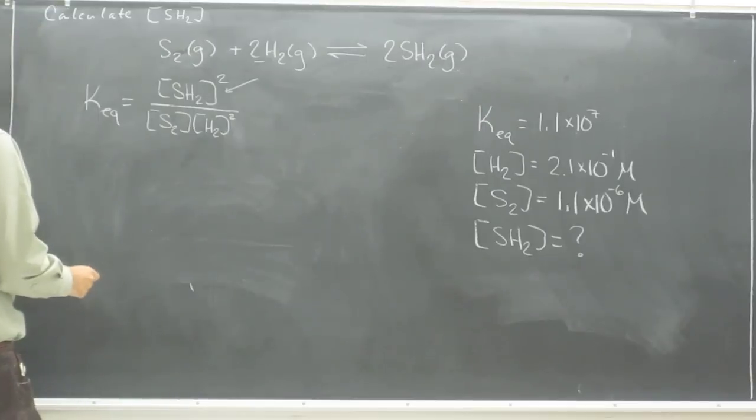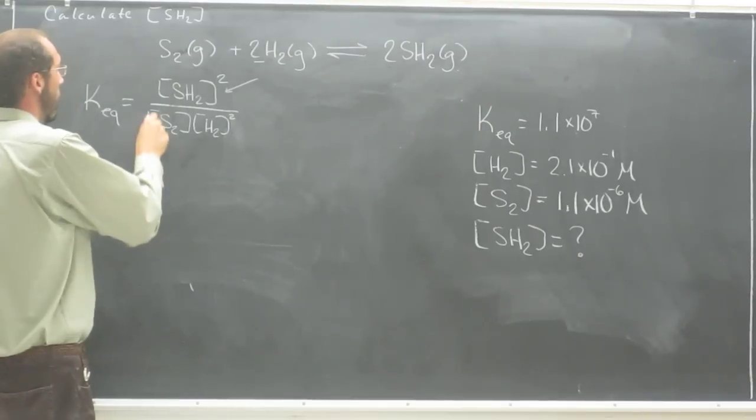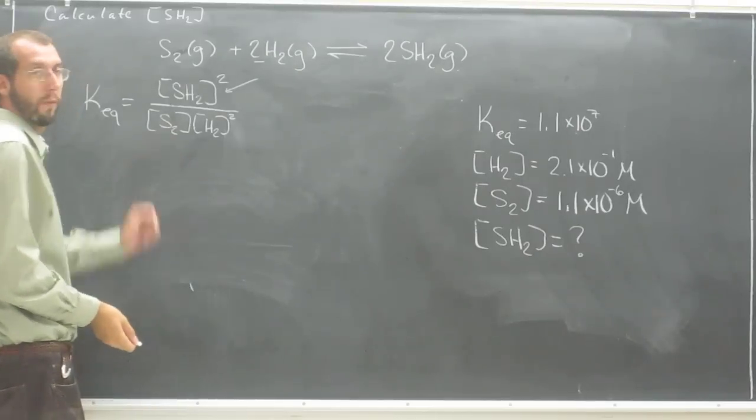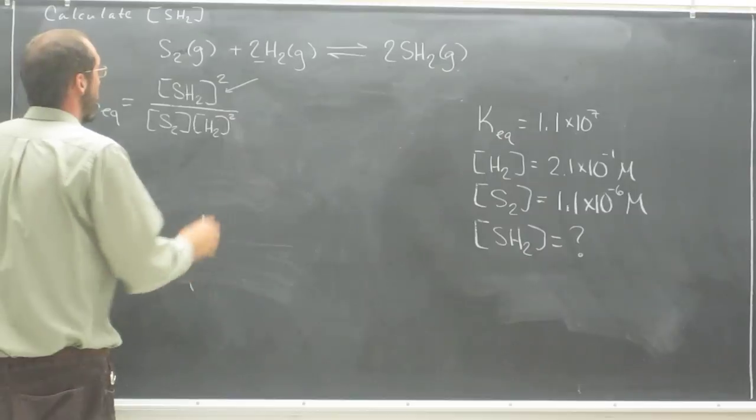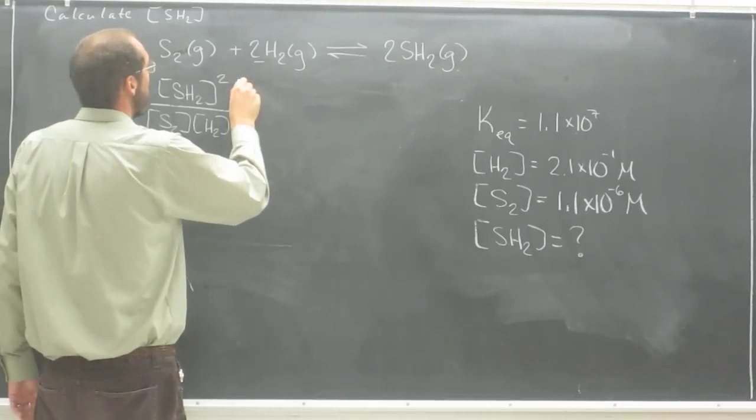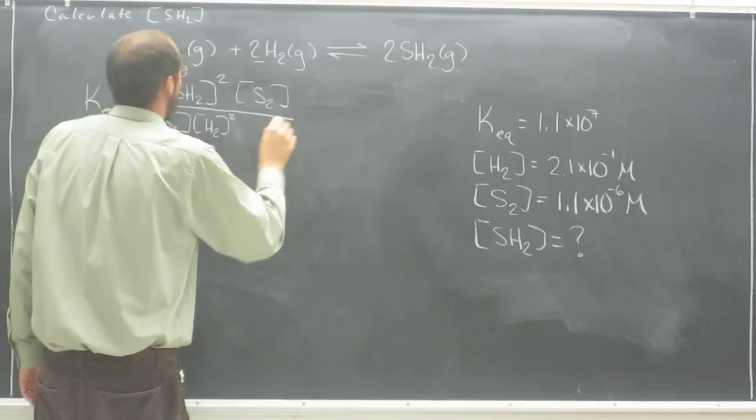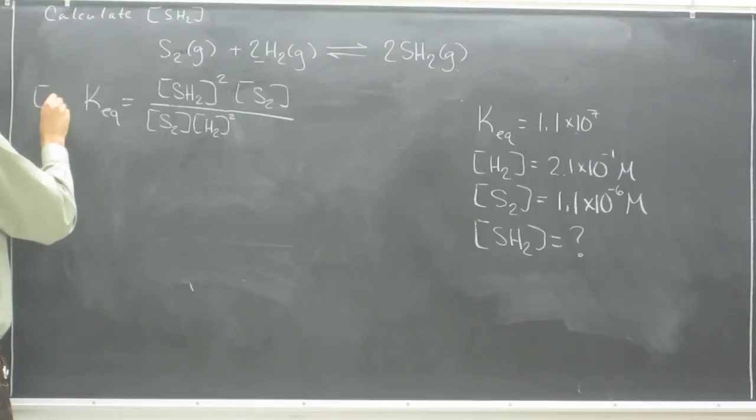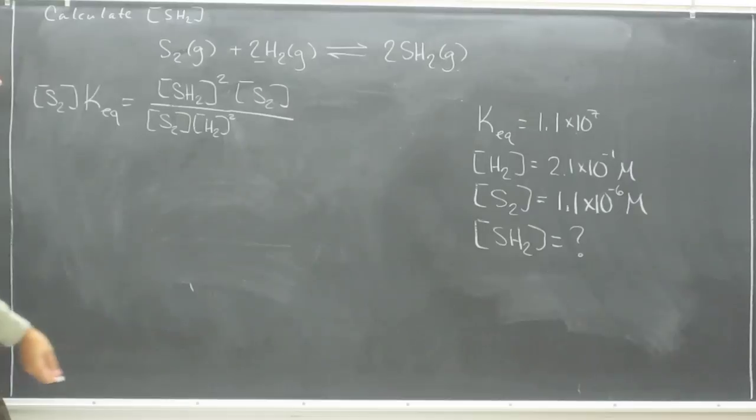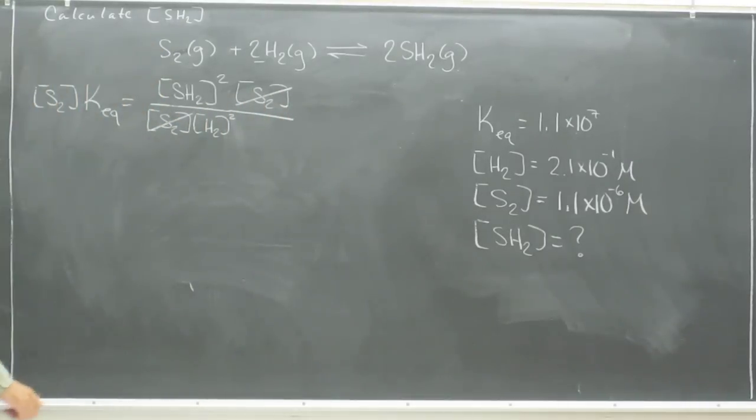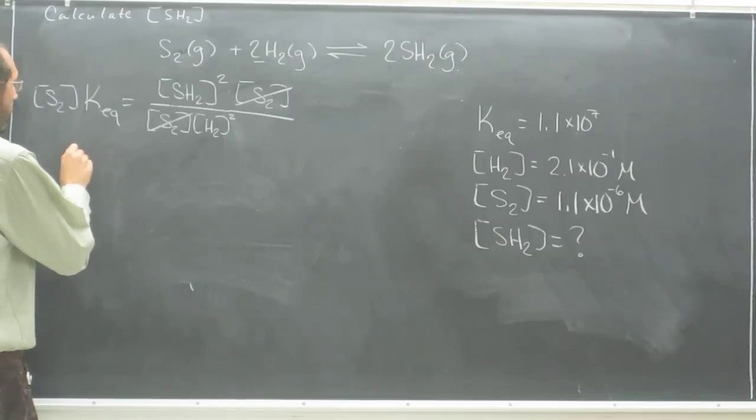So the first thing you could do, ideally, would be to get rid of the S2 concentration. So if we multiply both sides by S2, concentration of S2 times the concentration of S2, that cancels out the concentration of S2 there. So now we have a new expression.